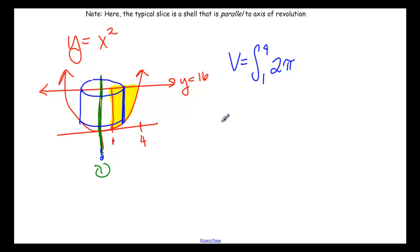So r here is the radius. And that is always going to be the distance from your slice to your axis.